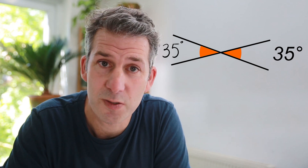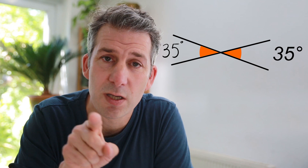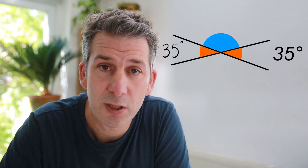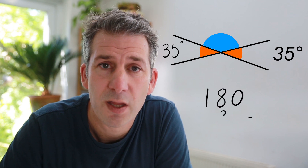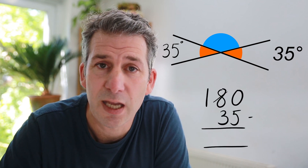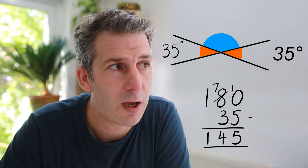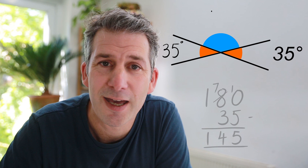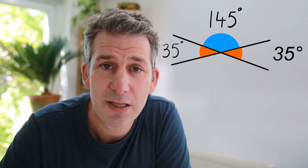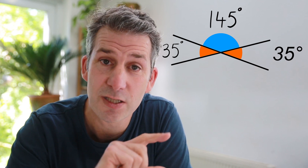We can use that to help us with this problem as well. Those two angles — the 35 degrees and that missing one — are going to add up to 180 degrees. So if we do 180 subtract 35, that is going to tell us what the missing angle is: 180 degrees subtract 35 degrees is 145. And the final angle is just vertically opposite that 145 degrees, so that's 145 degrees as well.